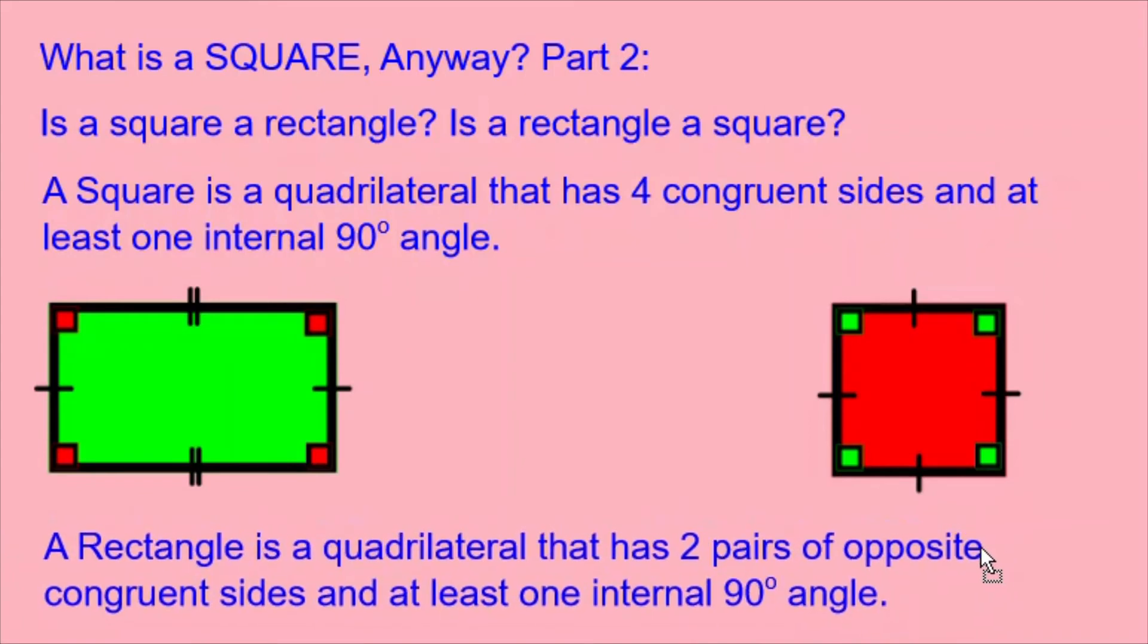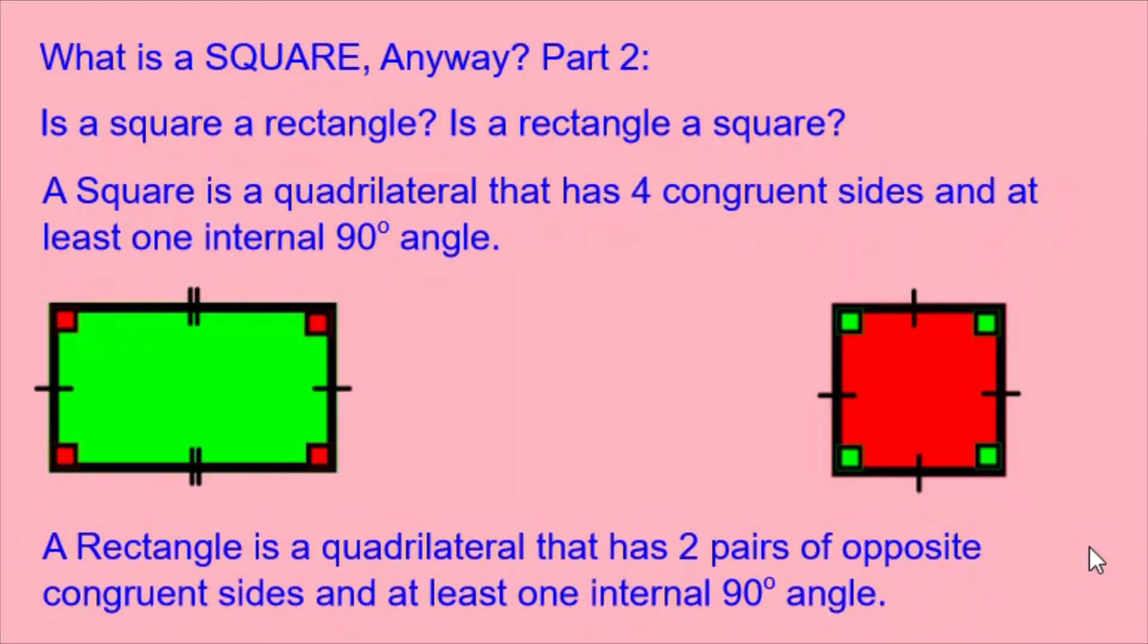Now, let's look at the definition of a rectangle. A rectangle is a quadrilateral that has two pairs of opposite congruent sides and at least one internal 90 degree angle. Very similar to the square. But it doesn't have to have four congruent sides. The four sides have to be broken down into two pairs of sides that are opposite and that are the same length.